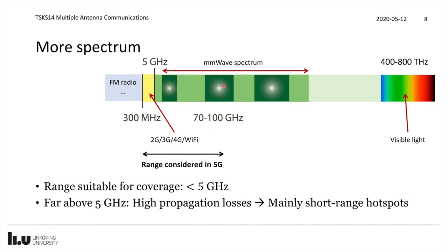Signals at millimeter wave frequencies are not propagating through basic obstacles like a human body or walls. For that reason, those higher frequencies are mainly useful for short-range hotspots in a room, while we still need to evolve the technology at lower frequencies to deliver good coverage. The early deployments of 5G are considering the 2.5 and 3.5 GHz range as the main spectrum ranges, adding specific millimeter wave spectrum as an add-on in certain regions.